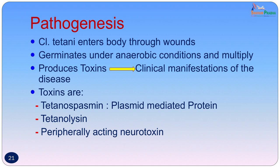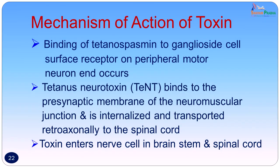Tetanolysin does not play a significant role in the clinical manifestations of the disease, but it is responsible for the beta hemolysis seen on blood agar when we grow the organism. The peripherally acting neurotoxin could play some role in causing local tetanus. How does this neurotoxin act?